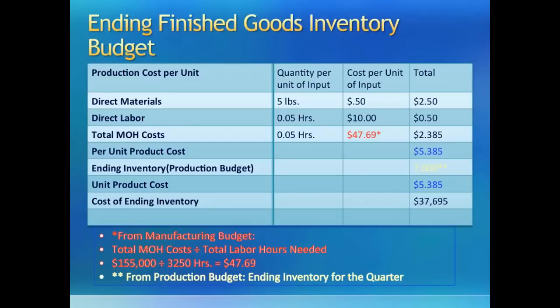Combining the three manufacturing costs, we get a per unit cost of $5.385, which is a slightly rounded number, so don't worry too much about small differences in total at the end. In the final step, we take the number of units in ending inventory from the production budget and calculate total cost of finished goods inventory to be $37,730.